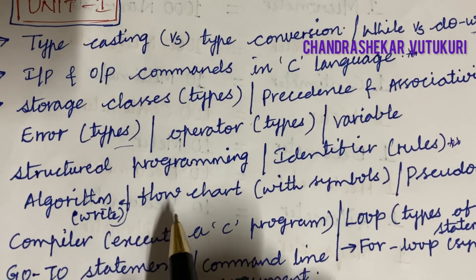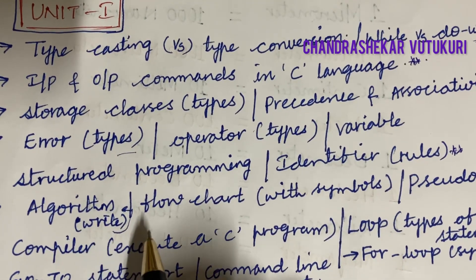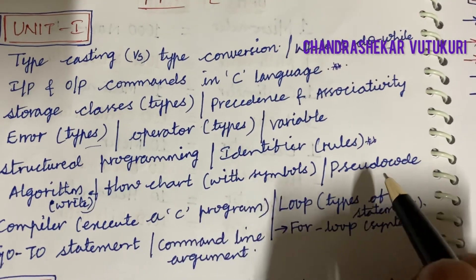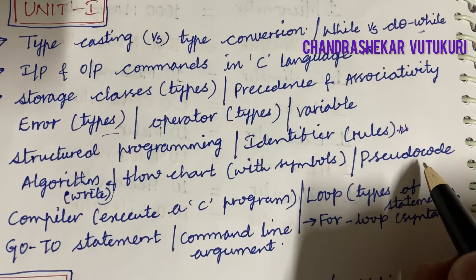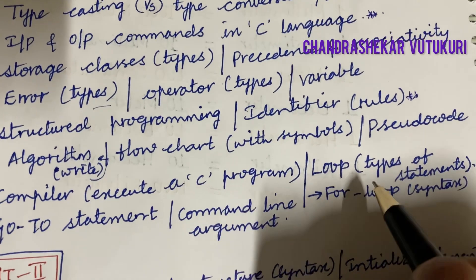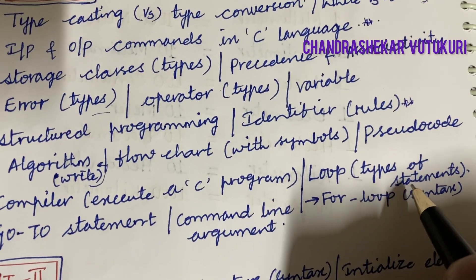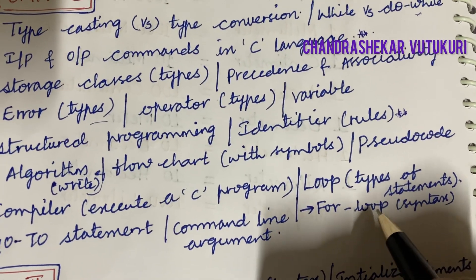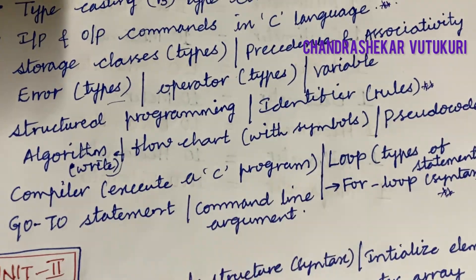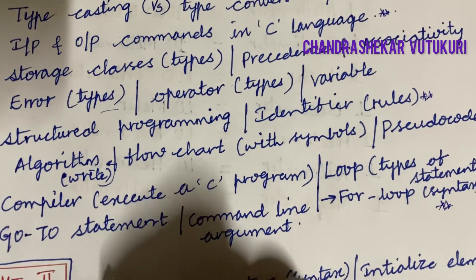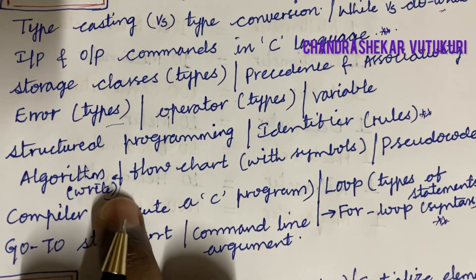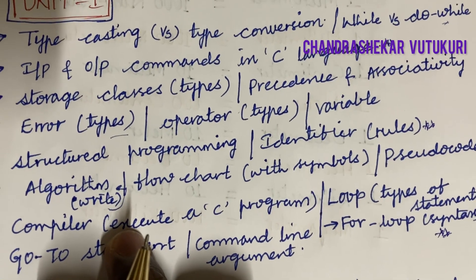You need to work out algorithms as well as flowcharts along with their definitions. Any algorithm may be asked, and you need to know the symbols of a flowchart. What is pseudocode is also said to be one of the short questions. Define the term compiler, execute C programming, what is a loop, the types of statements, for-loop syntax, goto statement, and command line arguments — you need to be thorough with all these concepts to score full marks.